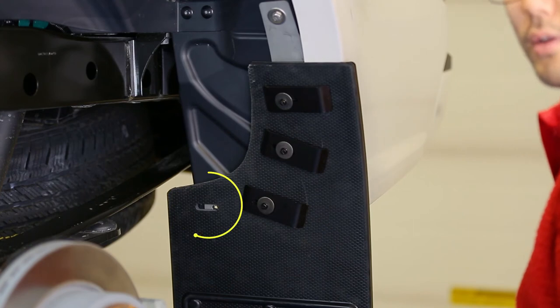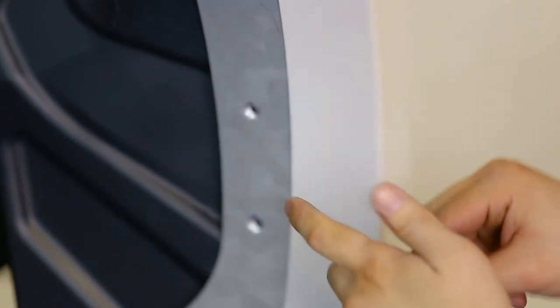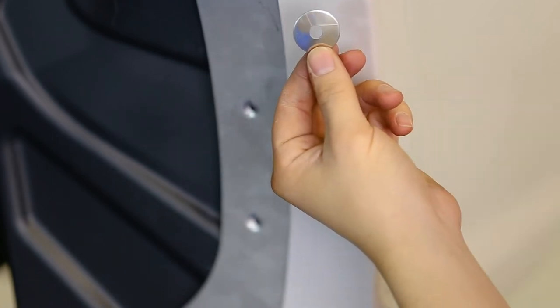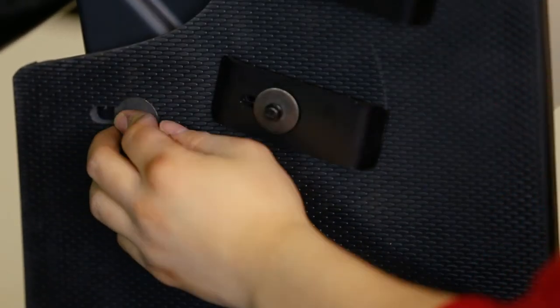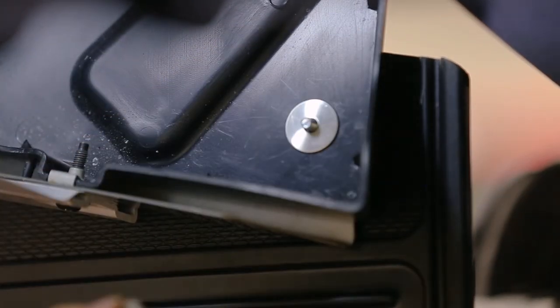Then, loosely install the remaining inner mud flap hole to the inner liner with a quarter inch stainless steel bolt, one inch stainless steel washer, and secure it with a one inch stainless steel washer, one inch lock washer, and quarter inch nut.